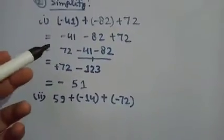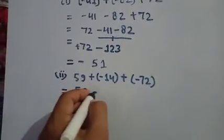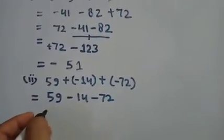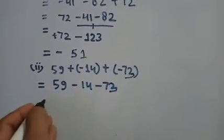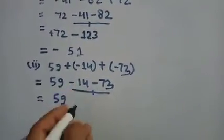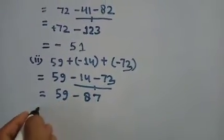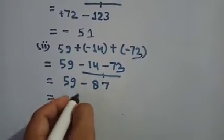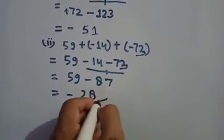The second part: 59 + (minus 14) + (minus 73). Open brackets: 59, minus 14, minus 73. Note down 59; the like integers minus 73 and minus 14 are added: 3 plus 4 is 7, and 7 plus 1 is 8, giving minus 87. Now there are opposite integers so there is subtraction: 87 minus 59 — 7 minus 9 gives 8, and 7 minus 5 is 2, so minus 28 is the correct answer.